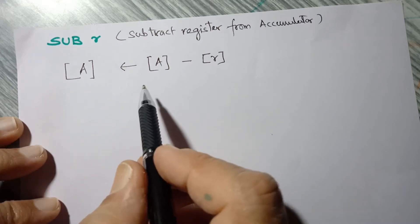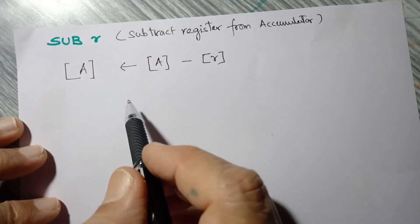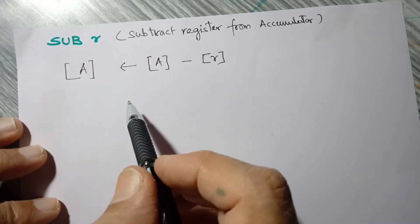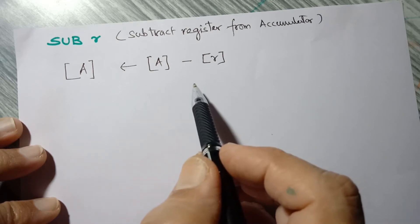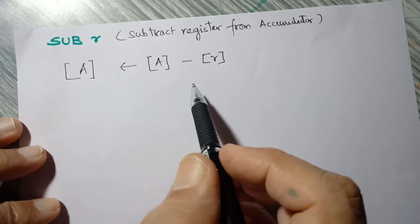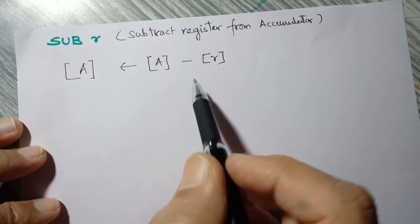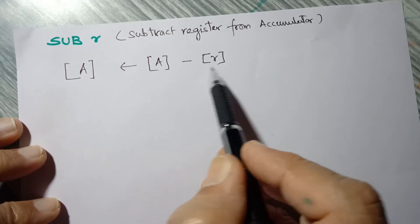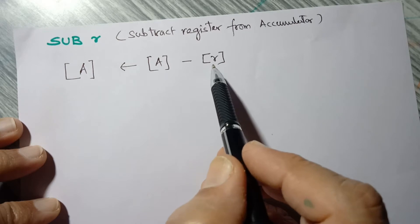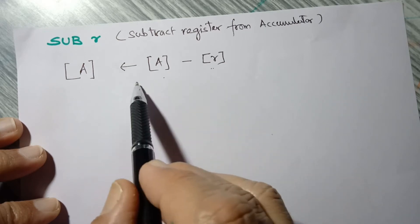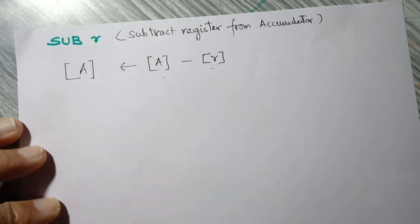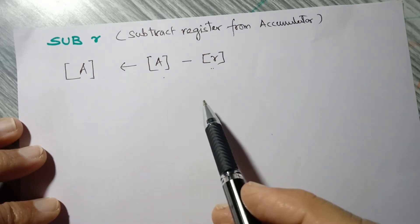Note that the 8085 performs binary subtraction using the two's complement method. That means whatever is subtracted, its two's complement is added to the minuend in order to get the subtraction. This two's complement method of subtraction you have studied last year.